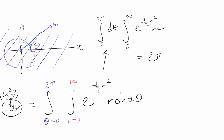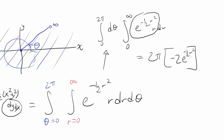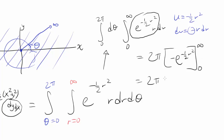Now we separate: the integral from 0 to 2π of dθ times the integral from 0 to infinity of e to the negative one-half r squared times r dr. The first part is obviously 2π. For the second part, we use u-substitution with u equal to negative one-half r squared, so du equals negative r dr. This gives negative e to the negative one-half r squared evaluated from 0 to infinity. Plugging in infinity gives e to the negative infinity, which is 0. Plugging in 0 gives e to the 0, which is 1. So the second integral equals 1. Therefore A squared equals 2π times 1, telling us A equals the square root of 2π.